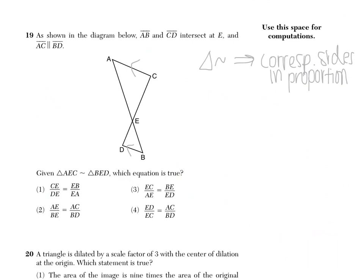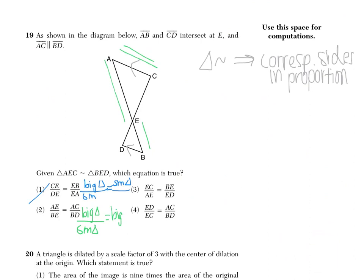Looking at choice 1: CE over DE — that's big triangle over small triangle — then EB, which comes from the small triangle. Going big over small then switching is not consistent, so choice 1 is out. Choice 2 starts with AE — big triangle — over BE — small triangle — equals AC, another big triangle term, over BD, small triangle. The corresponding parts match perfectly: big over small equals big over small. So choice 2 looks correct.